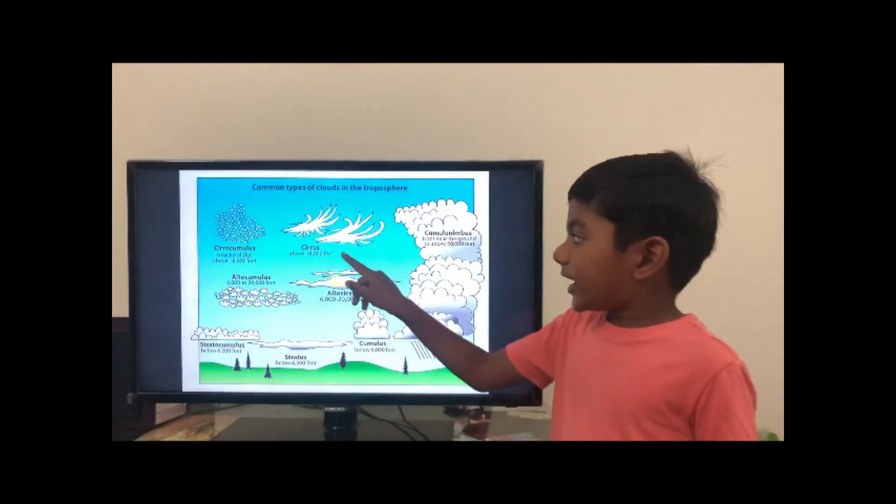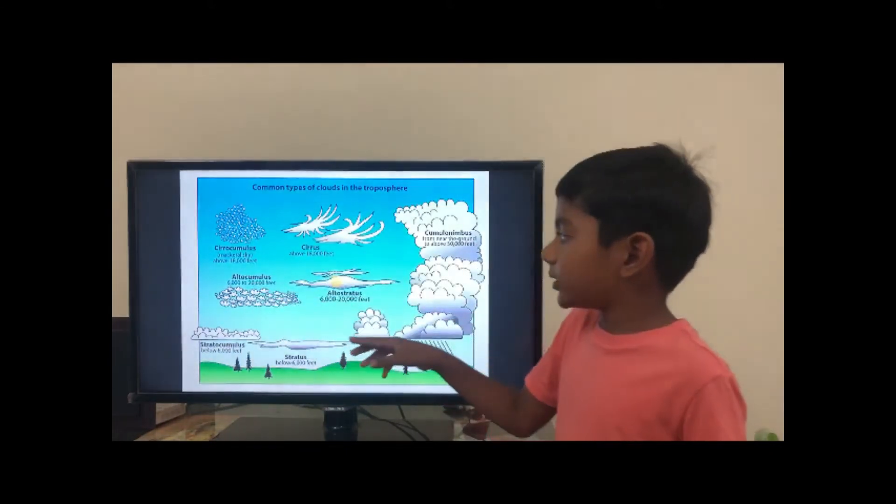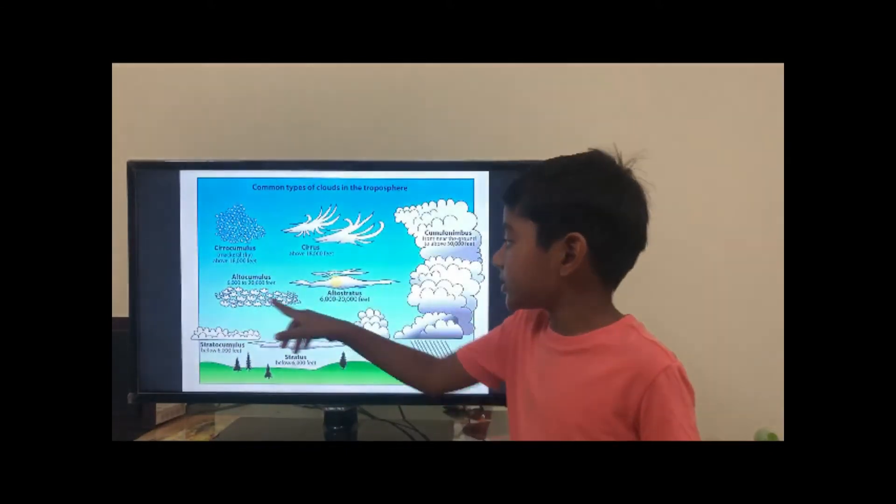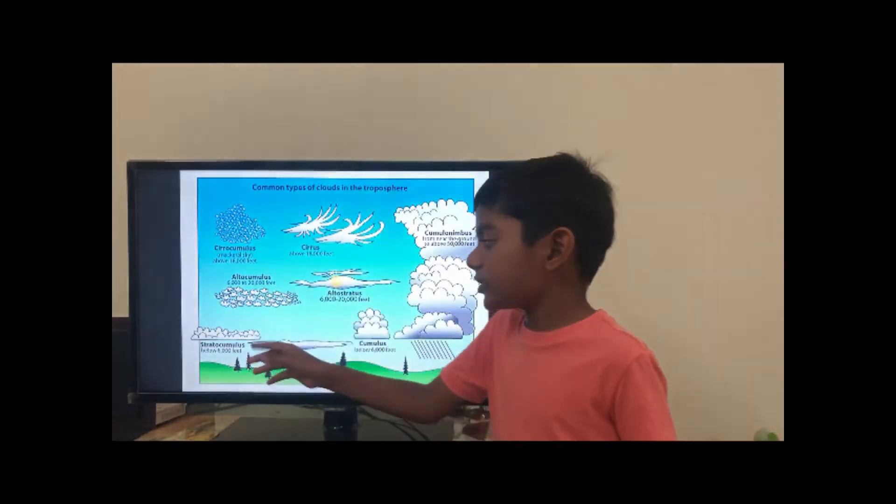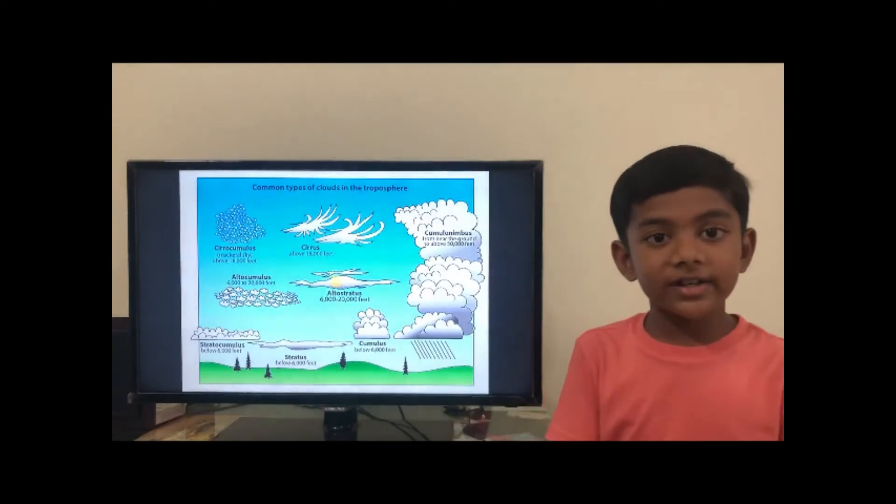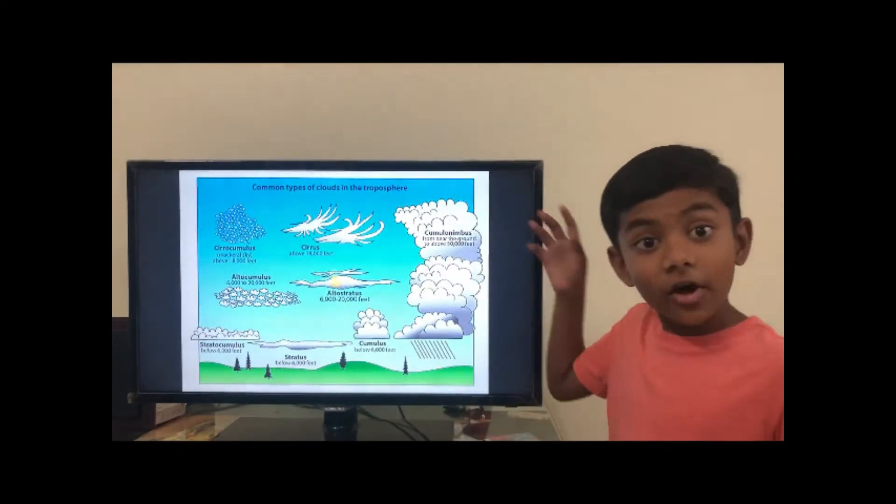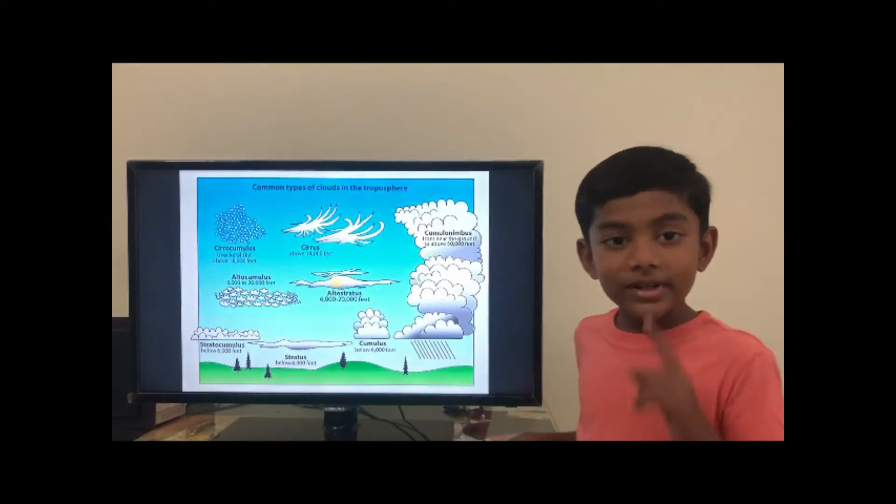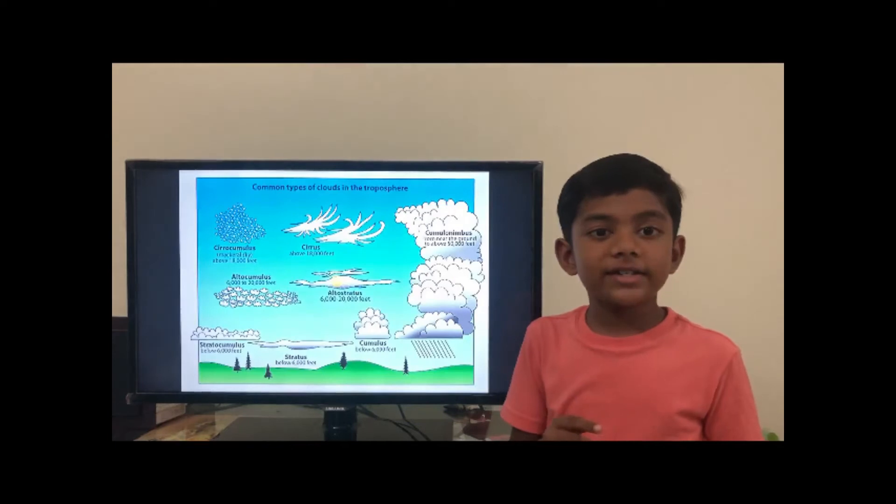You can see in the high clouds we have cirrus and cirrocumulus. In the mid clouds we have altocumulus and altostratus. In the low clouds we have cumulus, stratus, and stratocumulus. What's interesting is cumulonimbus comes into all the categories. This is interesting, right?